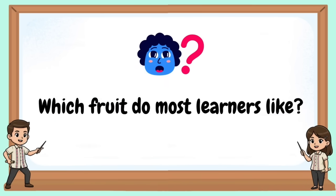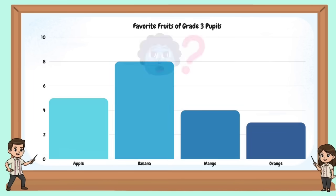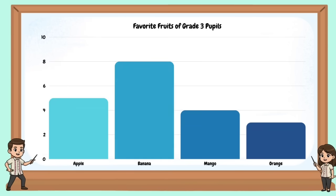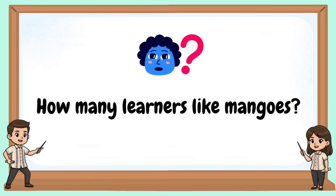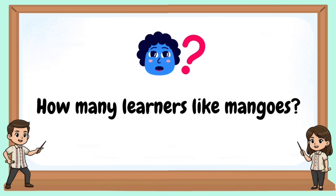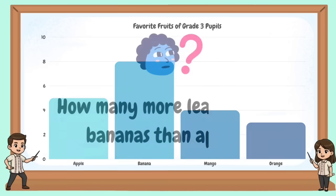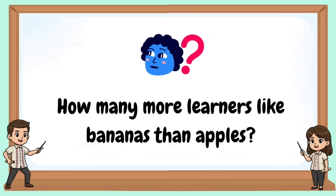Which fruit do most learners like? Which fruit is liked by the fewest learners? How many learners like mangoes? How many more learners like bananas than apples?